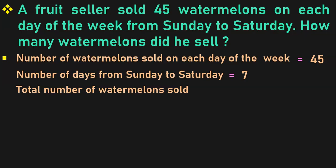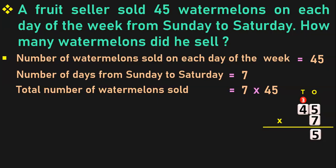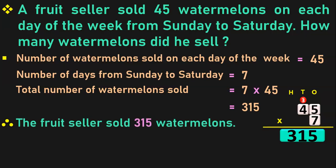We have to find the total number of watermelons sold, which is 7 into 45. Write down 45 with its place values — 1s and 10s — and write 7 in the 1s place. 7 into 5 is 35 — 5, carry over 3. 7 into 4 is 28, plus 3 is 31 — 1 in the 10s place and 3 moves to the 100s place. The product is 315. Therefore, the fruit seller sold 315 watermelons.